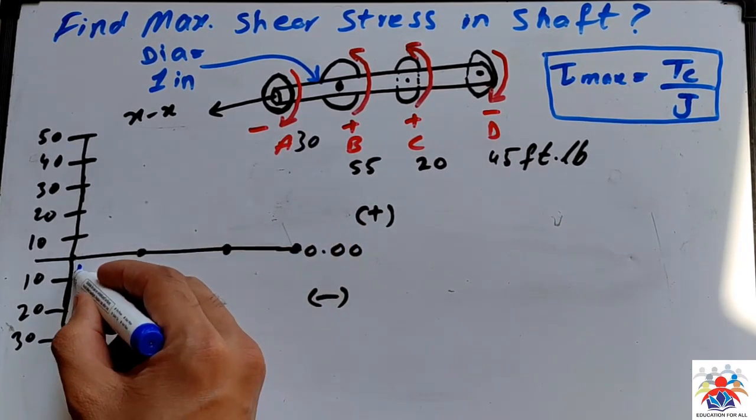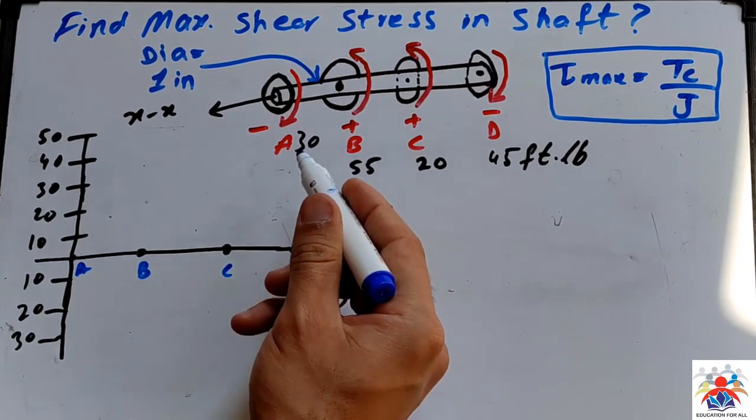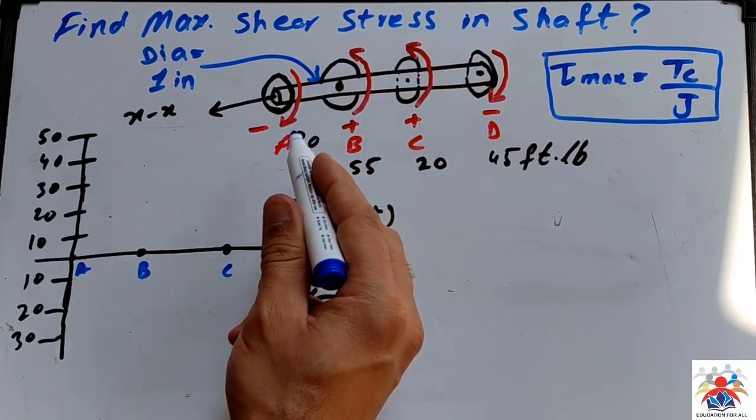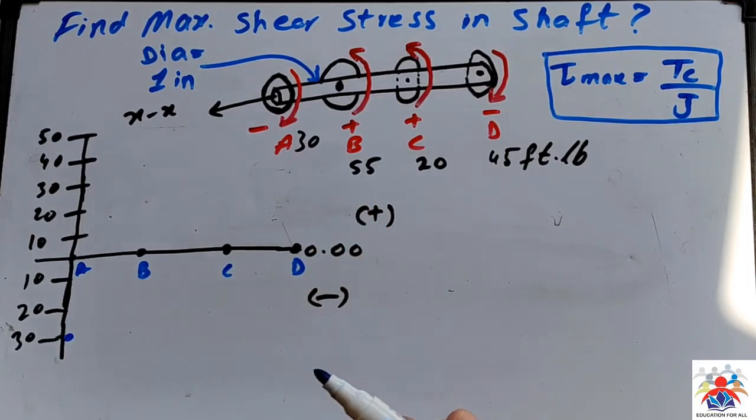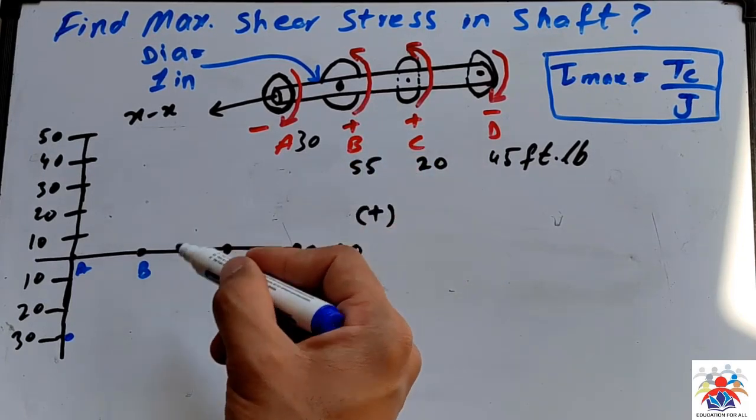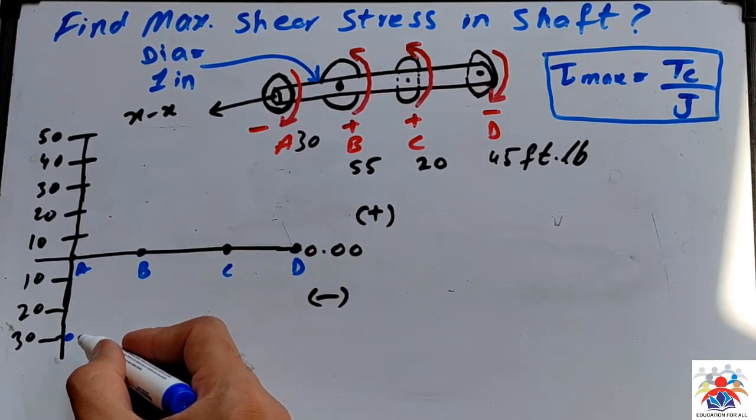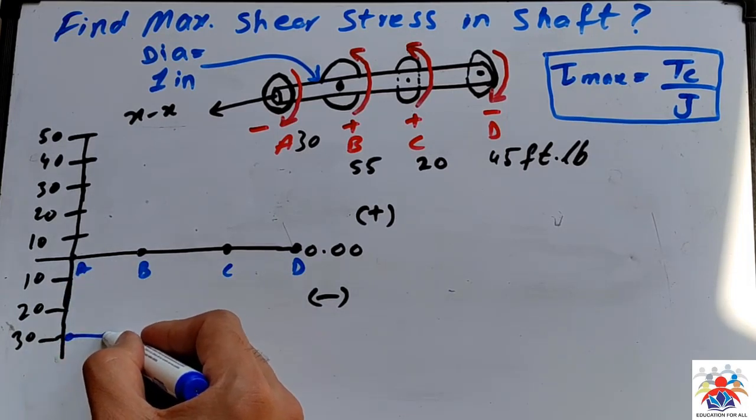As you can see, at point A, this is point A, this is point B, C, and this is D. At point A it says we have minus 30, so minus 30, we are here somewhere. And then at B we have 55.